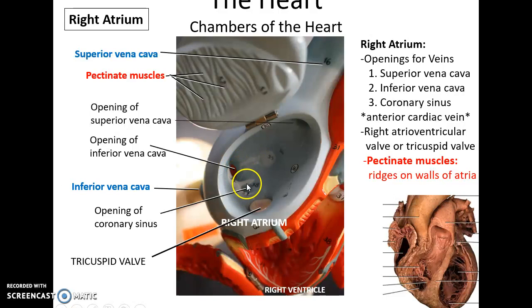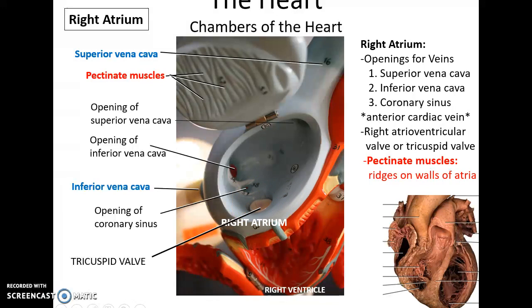The right atrium also has an opening for the coronary sinus. These openings allow blood to enter the right atrium. There is also a tiny opening, not seen in this picture, for the anterior cardiac vein that brings blood into the right atrium. There are ridges along the walls of the heart called the pectinate muscles, which contract to help the atria push blood out during pumping of the heart.